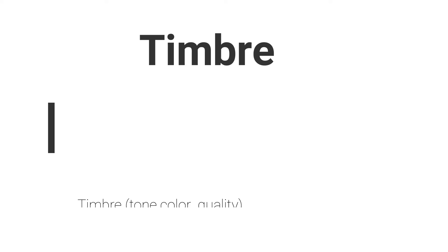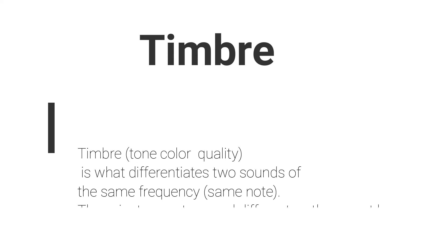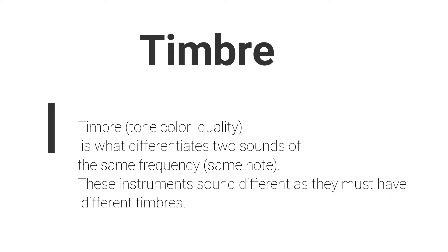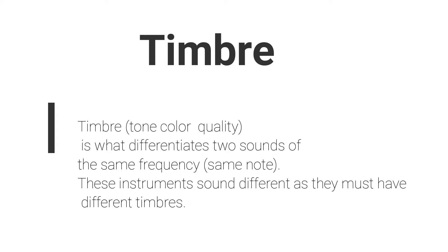These different sounds are called timbres. Timbres refer to a tone's colour and quality. It is what differentiates or distinguishes two sounds of the same frequency. For instance, a guitar does not sound the same as a piano, and a piano does not sound the same as a flute, and a flute does not sound the same as a violin. These instruments must have different timbres.